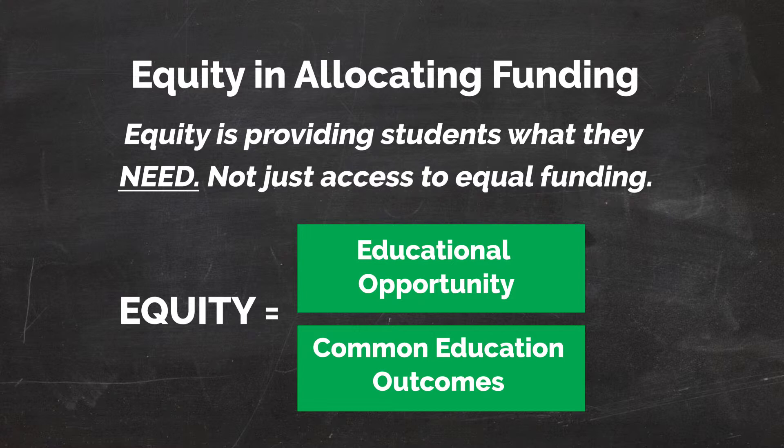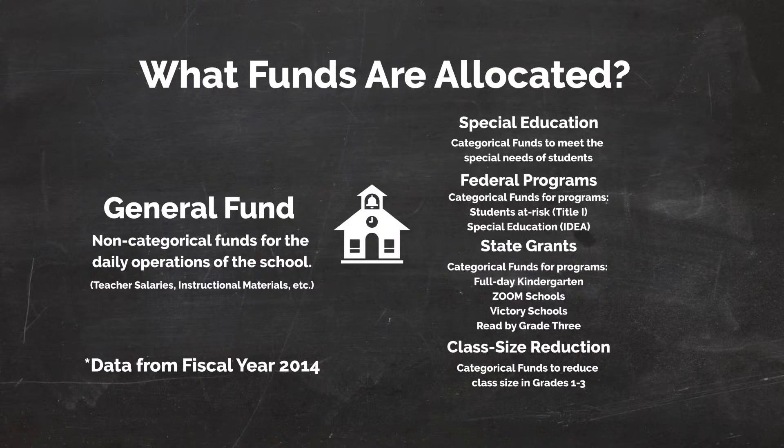Equity is providing students what they need and not just access to equal funding. So how does the Clark County School District go about doing this? The first thing we have to do is separate the different streams of revenue that the Clark County School District receives. One of the largest is from the state through the Nevada Plan. The Nevada Plan is a funding formula that was created in 1967 to appropriately fund school districts across the state of Nevada. The money the district receives from the Nevada Plan and some additional revenues received outside of this plan generally go into what's known as the general fund of the Clark County School District.